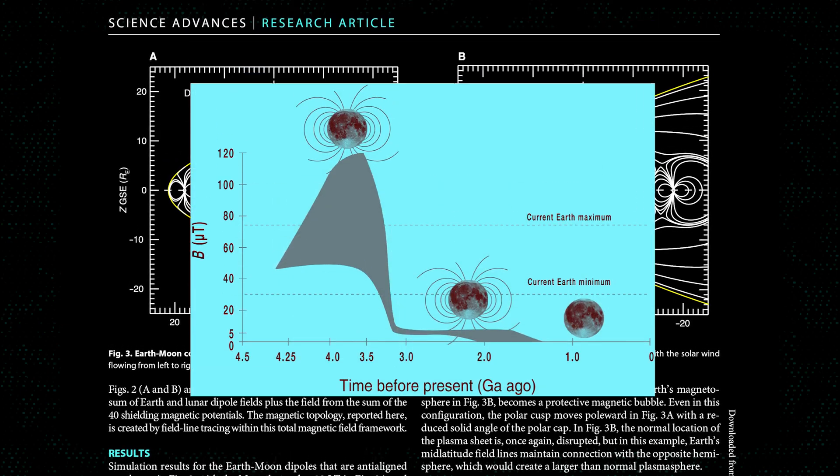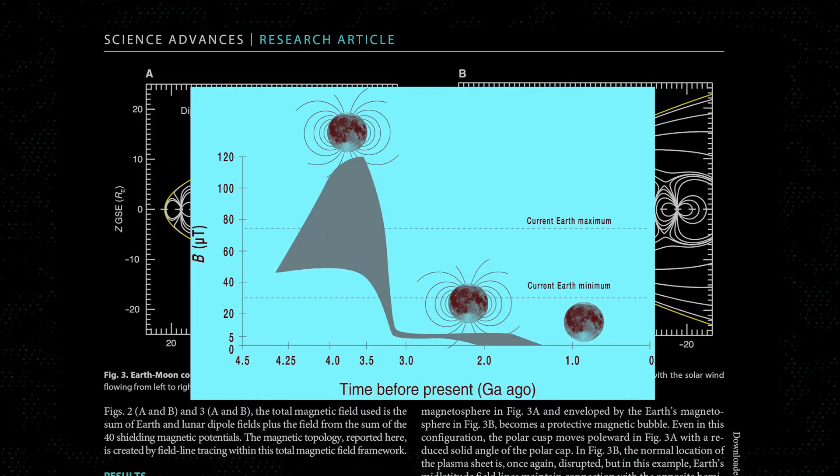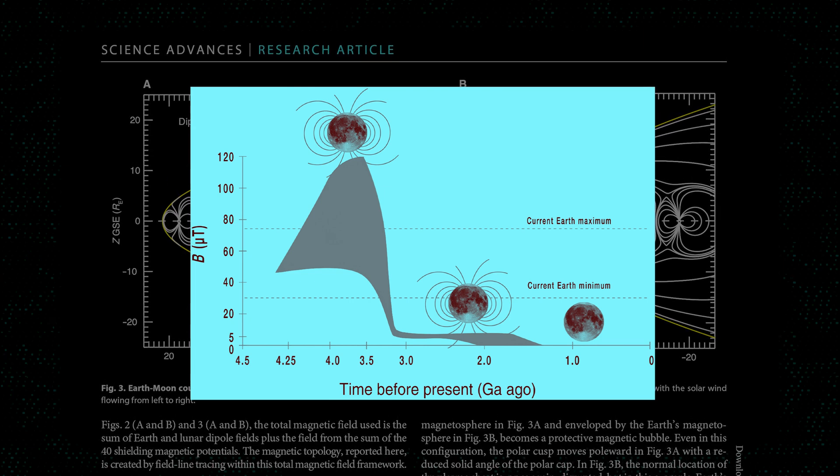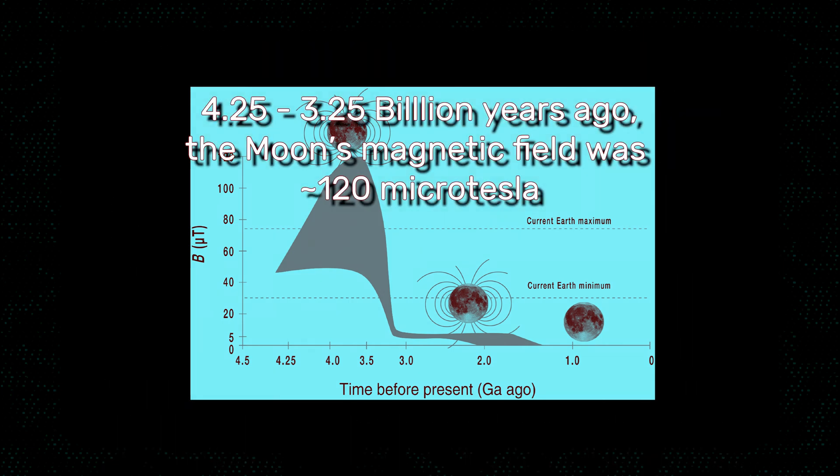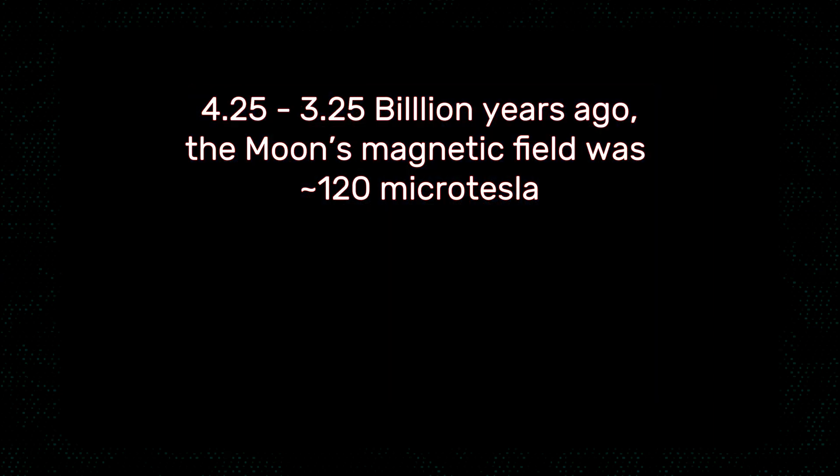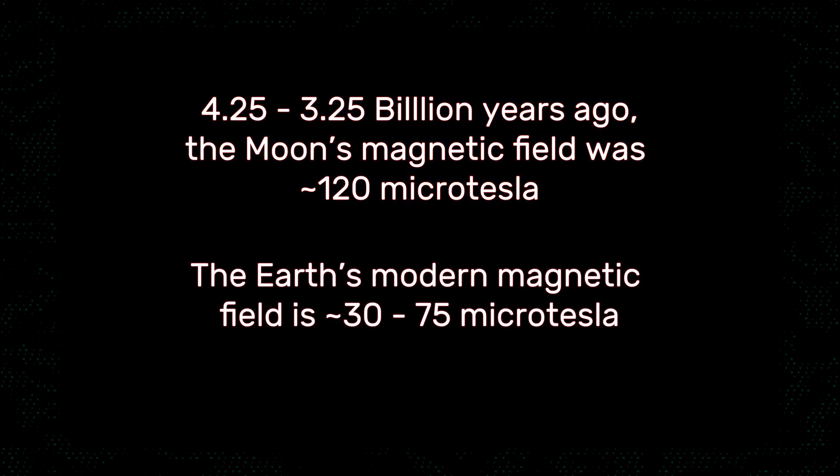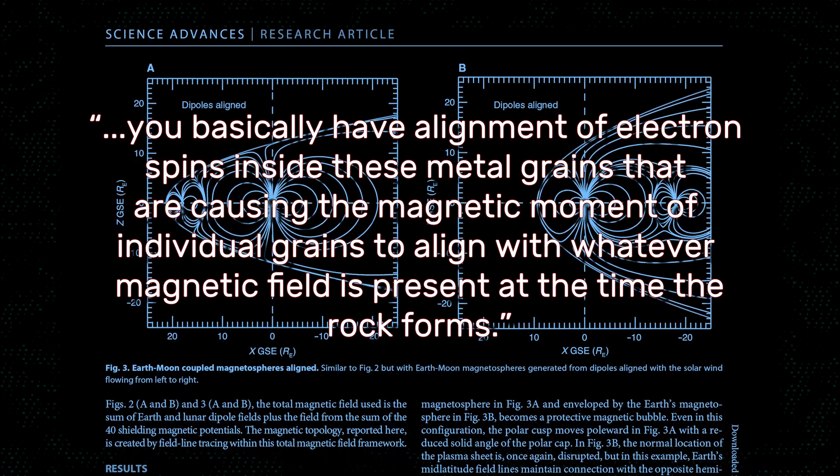Between 4.25 and 3.25 billion years ago, the moon's magnetic field reached intensities of about 120 microtesla, while today Earth's field fluctuates between about 30 and 75 microtesla. Yes, you heard that right. The ancient moon once had a magnetic field almost twice as strong as the modern Earth's magnetic field.